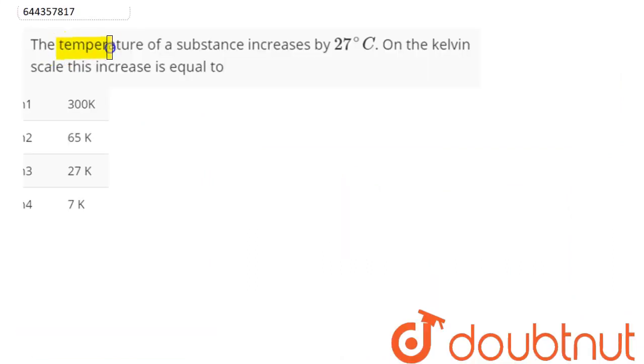Question is, temperature of a substance increases by 27 degree Celsius. On the Kelvin scale, this increase is equal to.